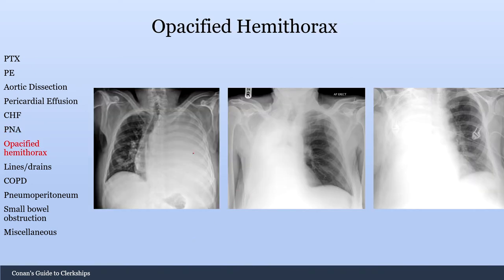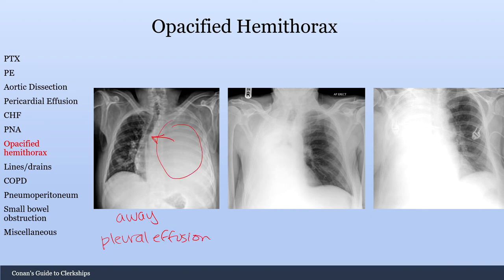Next, let's talk about an opacified hemithorax — where the whole half of the thorax is whited out. The main way to narrow your differential is based on tracheal deviation. Here the trachea is deviating away from the opacified hemithorax — the differential for that would be a massive pleural effusion, because so much fluid is pushing the trachea to the other side.